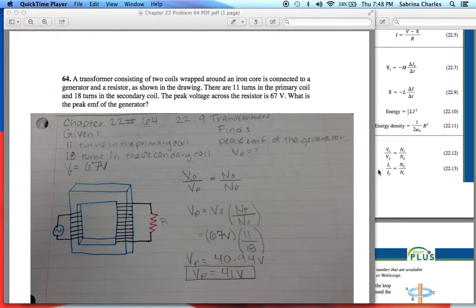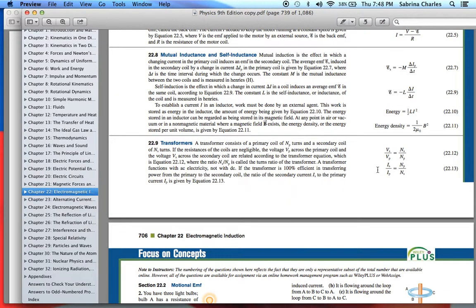If you look at section 9, we know that a transformer consists of a primary coil NP (the number of turns) and a secondary coil of NS turns. If the resistances of the coils are negligible, the voltage VP across the primary coil and the voltage VS across the secondary coil are related according to the transformer equation.